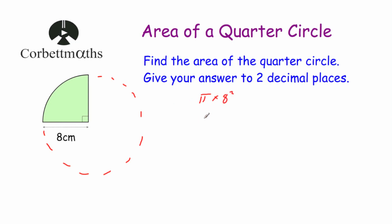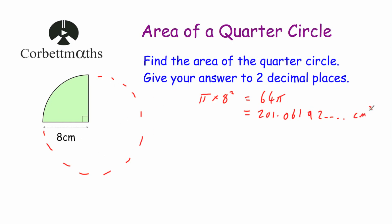So let's do pi times eight squared on our calculator. That gives us 64 pi, or 201.06192 and so on. Putting some dots shows the number carries on. So we've got the area of the whole circle as 64 pi or 201.06192… centimetres squared.